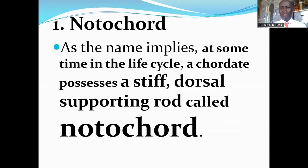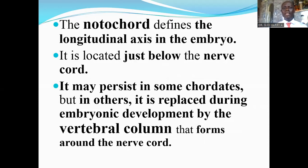I want to look at each of these cardinal features that are found in chordates that are not found in other groups of organisms. The notochord is the first one to be discussed. At some stage in the life cycle of chordates, they develop or possess a stiff dorsal-supporting rod called the notochord. The notochord defines the longitudinal axis in the embryo. It is located just below the dorsal hollow nerve cord. It persists in some chordates, but in others it is replaced during embryonic development by the vertebral column that forms around the nerve cord.